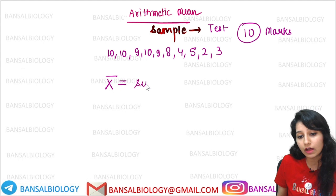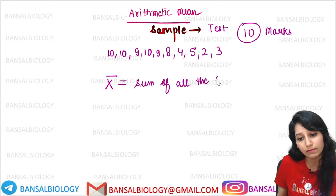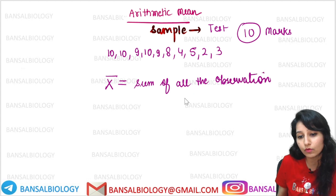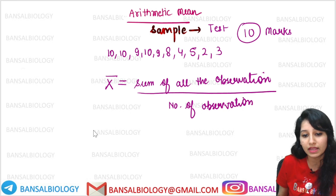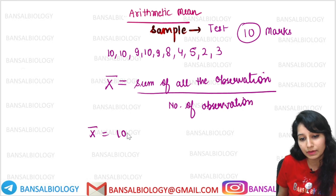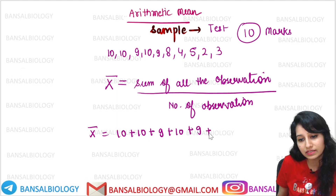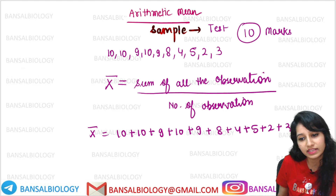This is the symbol of Arithmetic Mean. The formula is: the sum of all the observations divided by the number of observations. How many observations are here? If I calculate the sum: 10 + 10 + 9 + 10 + 9 + 8 + 4 + 5 + 2 + 3. I have added all of them here.